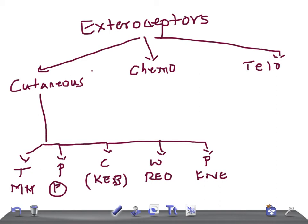The chemoreceptors are of two types: one is for taste and the other is for smell. For taste we have taste buds, and for smell we have the olfactory bulb, also known as olfactory receptors.